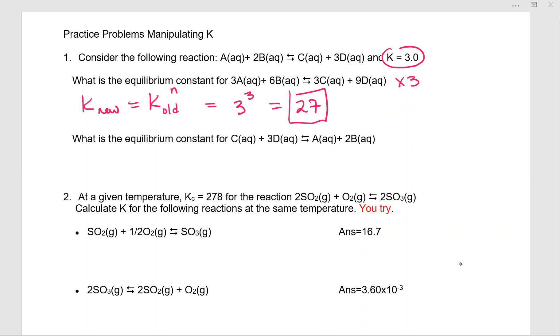Now we have to find the equilibrium constant for C plus 3D in equilibrium with A plus 2B. This looks like all we've done is reverse it. So we're going to write an R there. So we know that K new has got to be equal to the inverse of K old. And so we have 1 over 3.0, which is 0.33. So again, these are very common on the multiple choice section of the test.